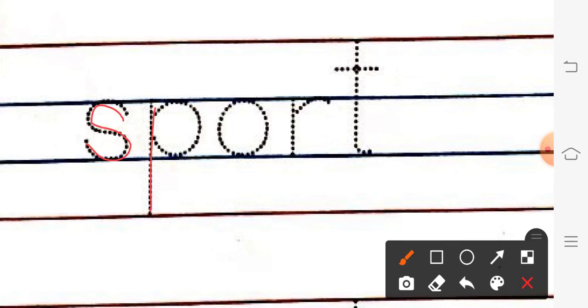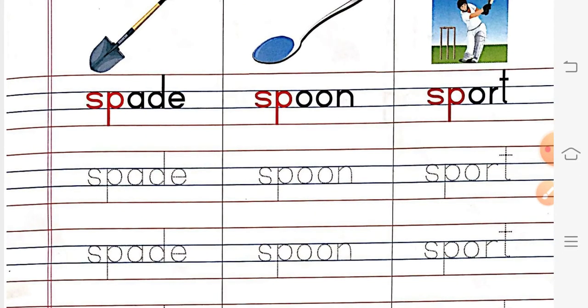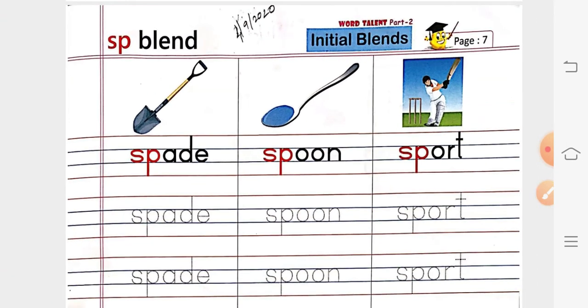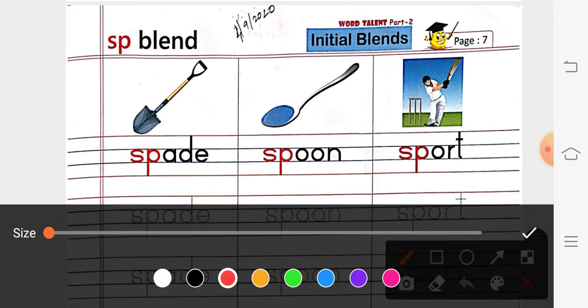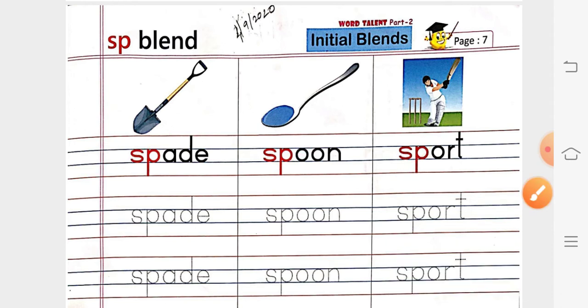S, P, O, R, T. Sport. What did we learn? Sport. So, this is our S, P blends. We learned Spade, Spoon, and Sport. Let us do it once again before ending up.